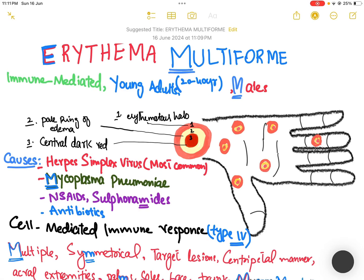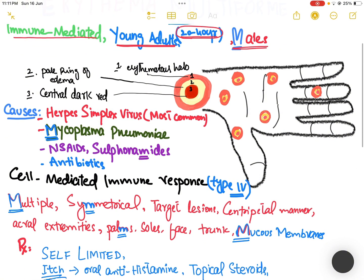Today we are going to talk about erythema multiforme. It is immune-mediated and mostly presents in young adults of average age 20 to 40 years with slight male predominance.